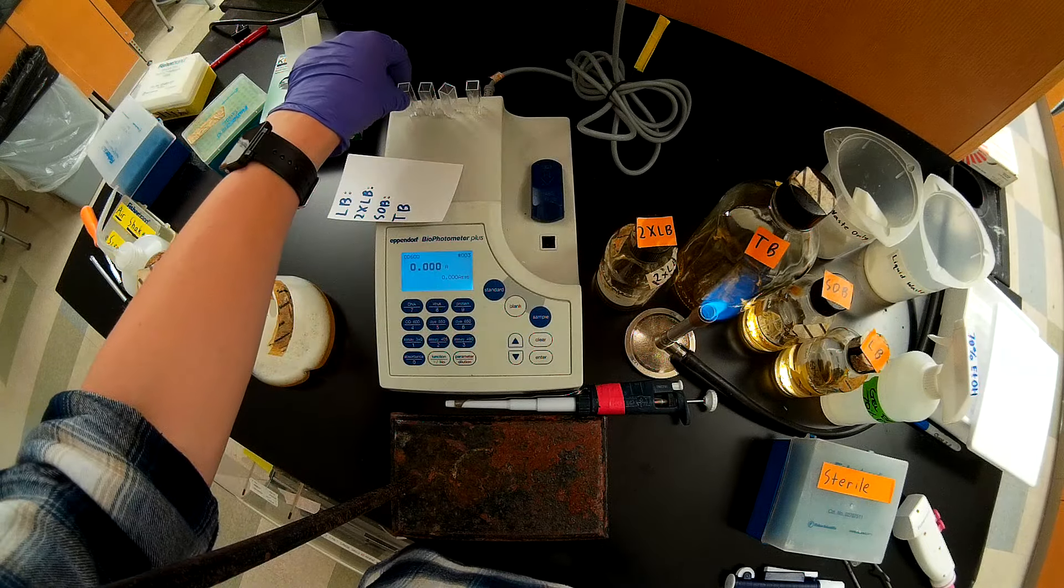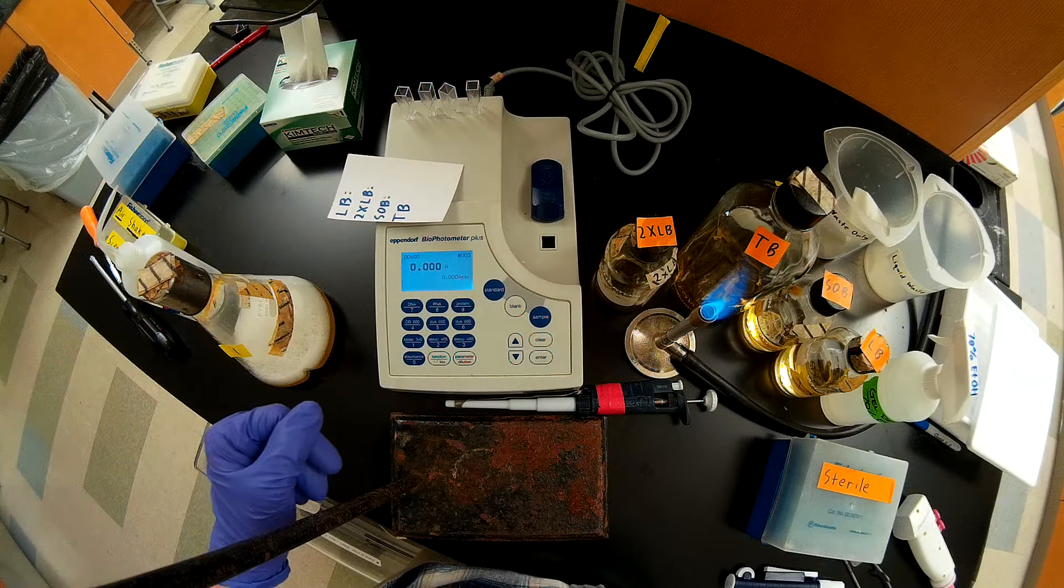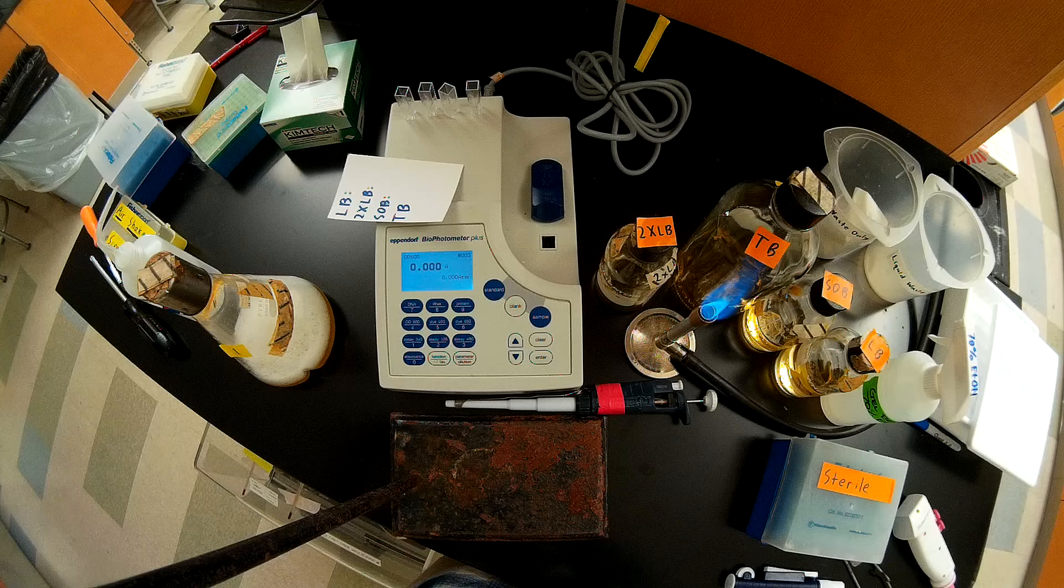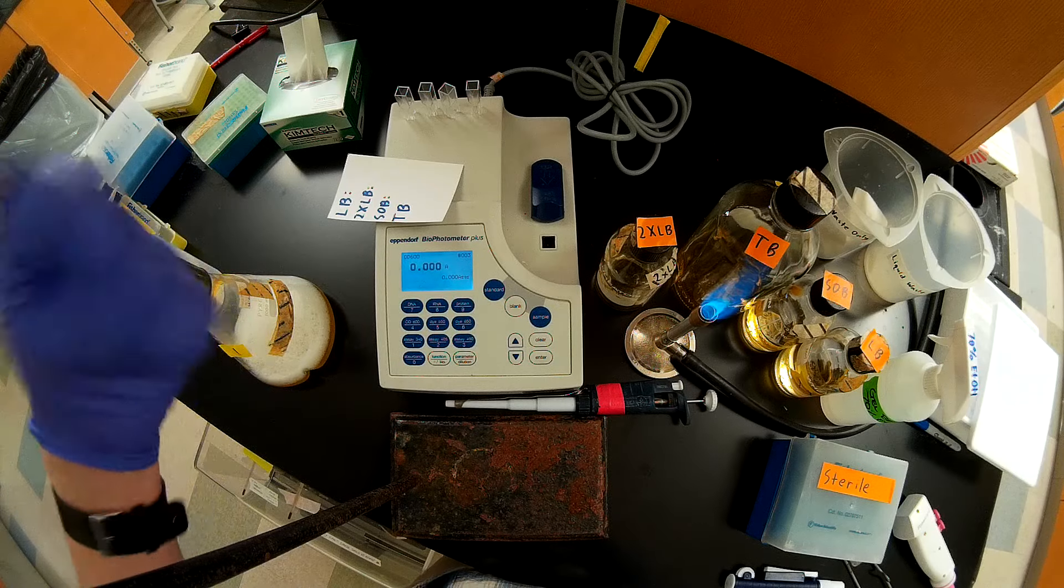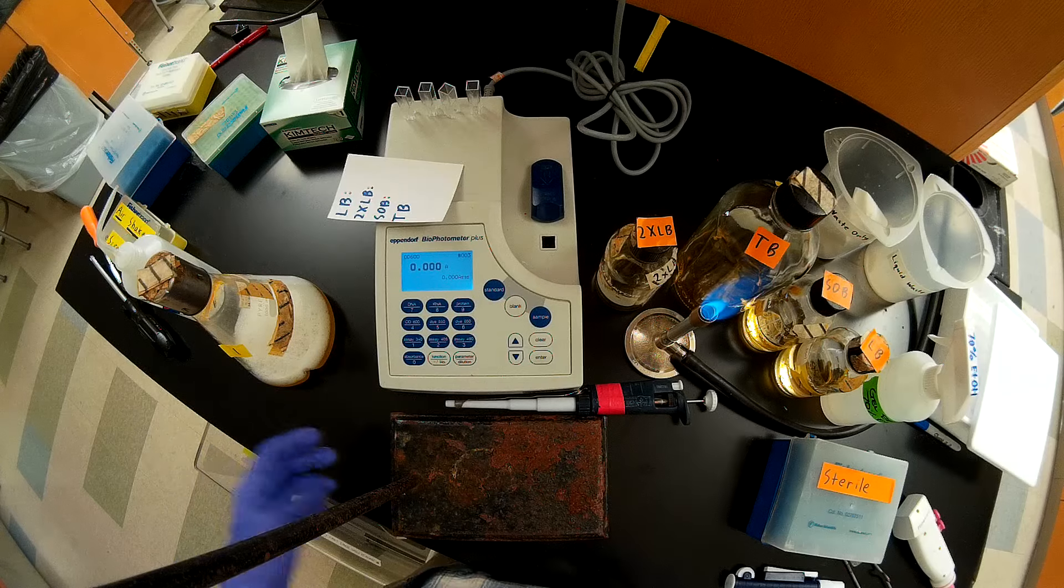So basically when you're taking an OD600 measurement, you do not expect to see great variability between the different cuvettes. So it's actually worth just using a new cuvette for each measurement rather than dumping it out and rinsing it out because by rinsing it out, you're going to dilute your sample.